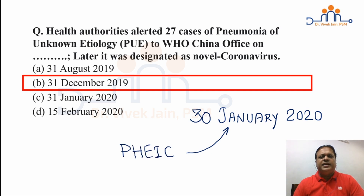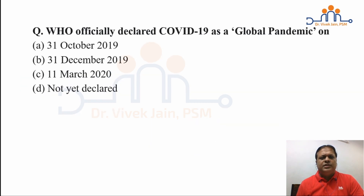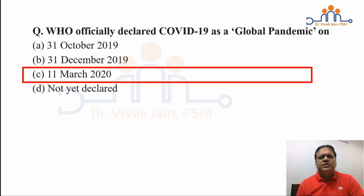On that very date, 30th of January 2020, the first case of coronavirus was also reported in India, in the state of Kerala. Moving to the next question: examination bodies are very fond of asking dates through PSM, such as the date of global eradication of smallpox (8th May 1980). Similarly, COVID-19 was declared a pandemic by WHO on 11th of March 2020.